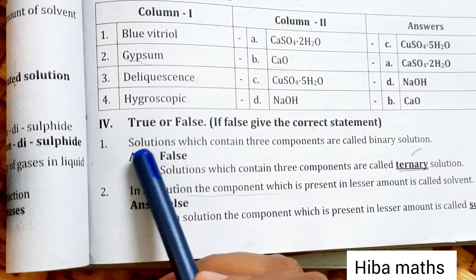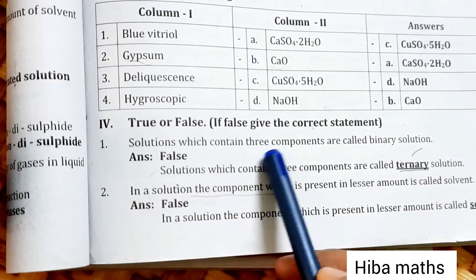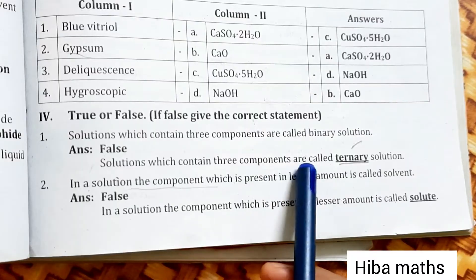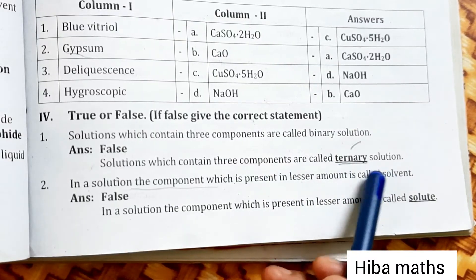True or false: solutions which contain three components are called binary solutions. False. Solutions which contain three components are called ternary solutions.